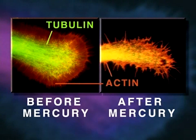Shown here is a neurite growth cone stained specifically for tubulin and actin, before and after mercury exposure. Note that the mercury has caused disintegration of tubulin microtubule structure.